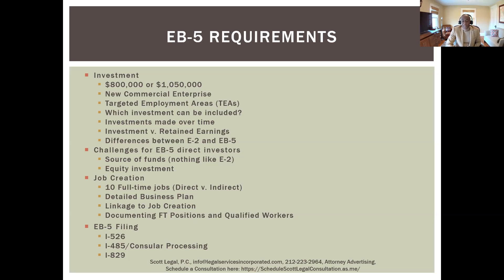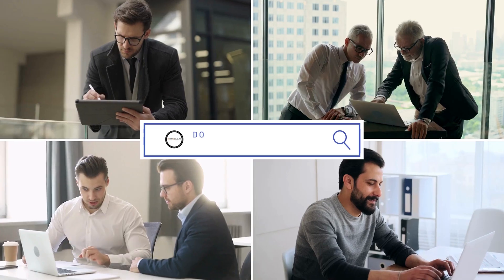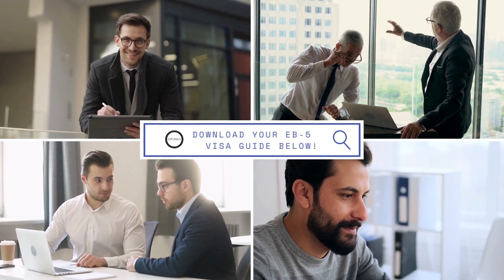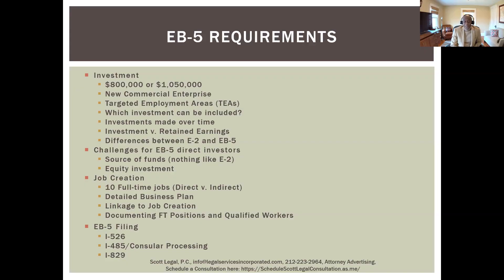Unlike an E-2, EB-5 doesn't have a specific investment amount or employee count requirement on paper, but the EB-5 has a much more extensive review of the source of funds. While the statutory language for both E-2 and EB-5 looks similar, the scrutiny applied to EB-5 petitions is quite a bit higher than for E-2 petitions. The investment must also be an equity investment — it can't be a loan — and there cannot be any guarantee of the return of funds.